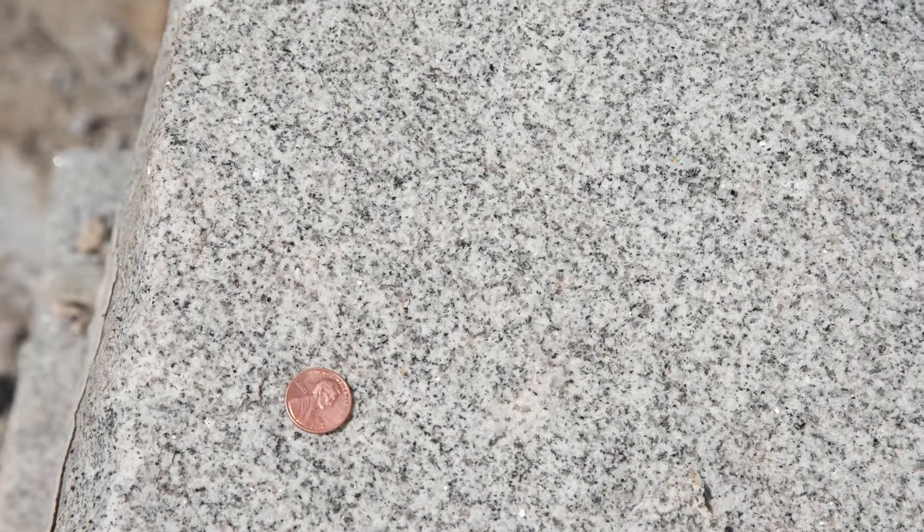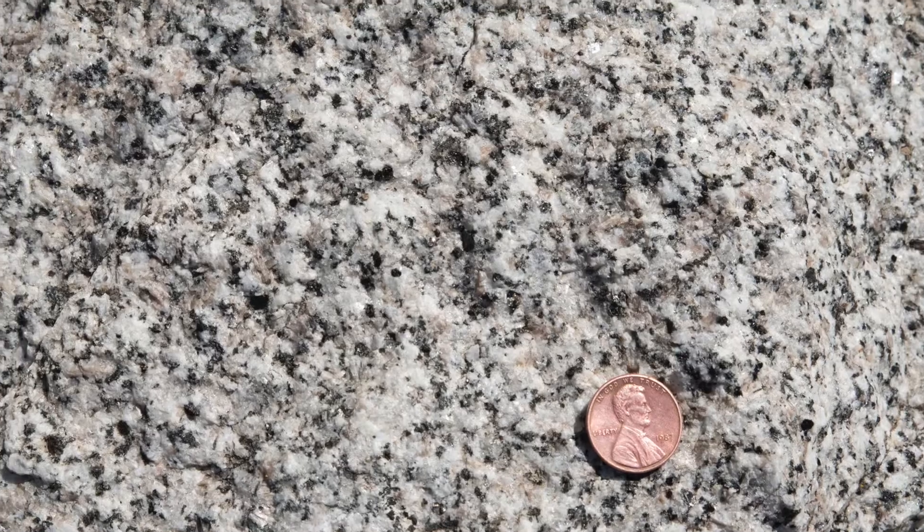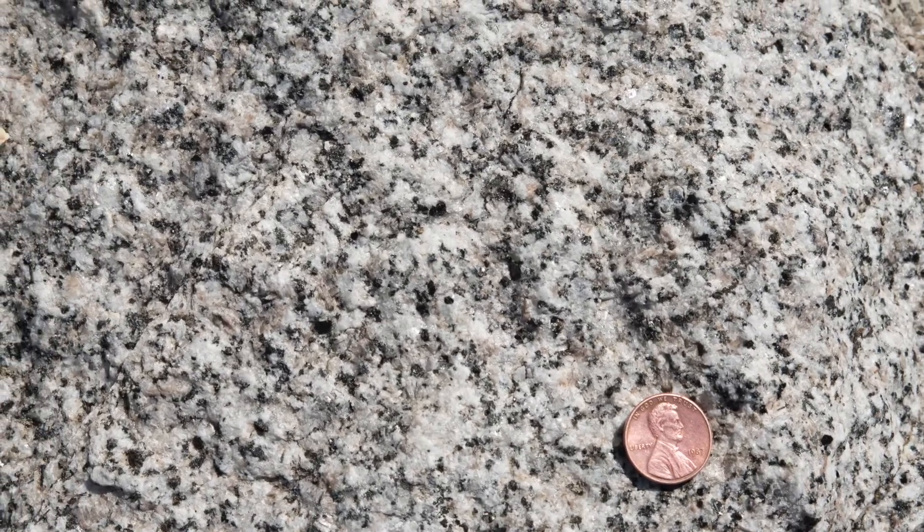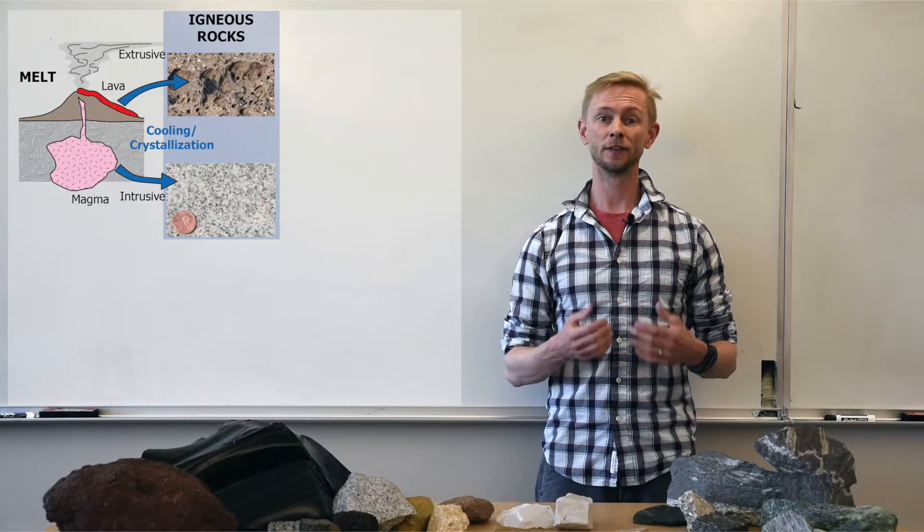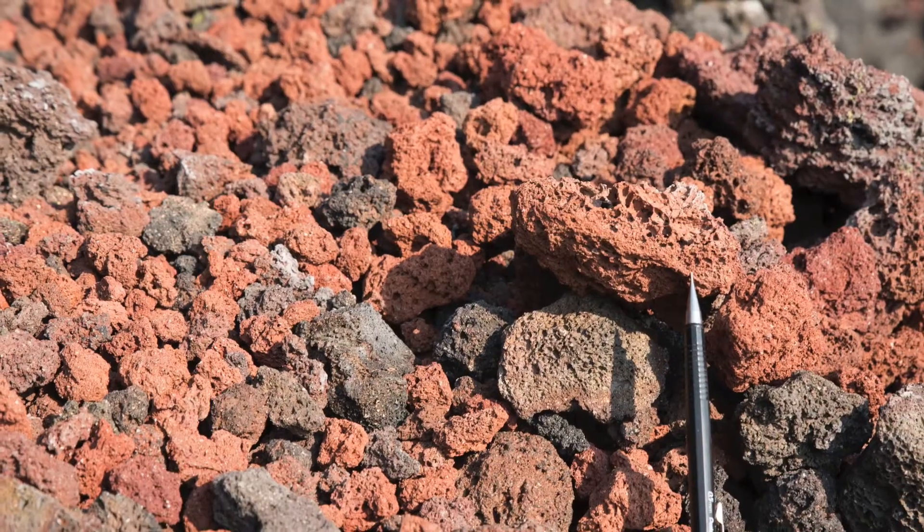When a melt crystallizes within the earth, the resulting igneous rock is classified as intrusive, meaning it formed within the earth's interior. If the melt works its way to the surface and crystallizes as a lava, these igneous rocks are extrusive, forming on earth's exterior surface.